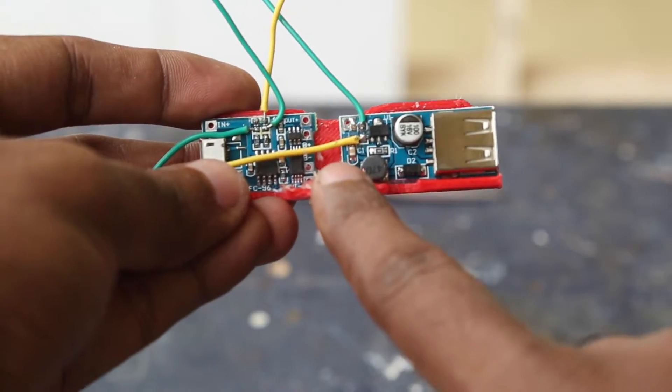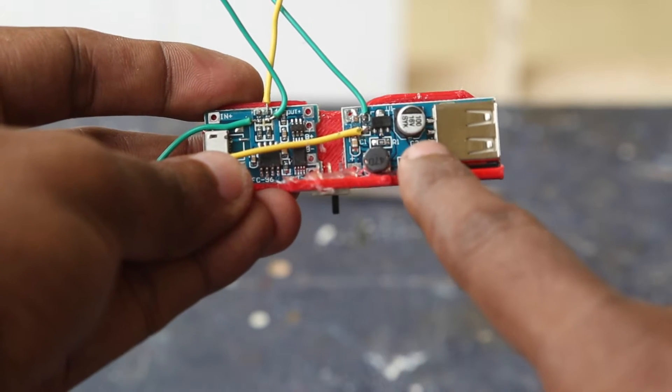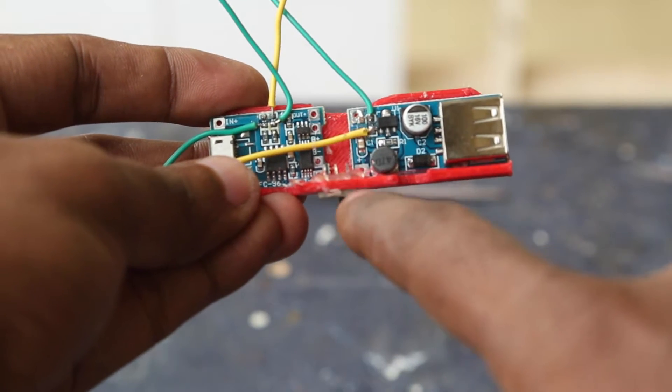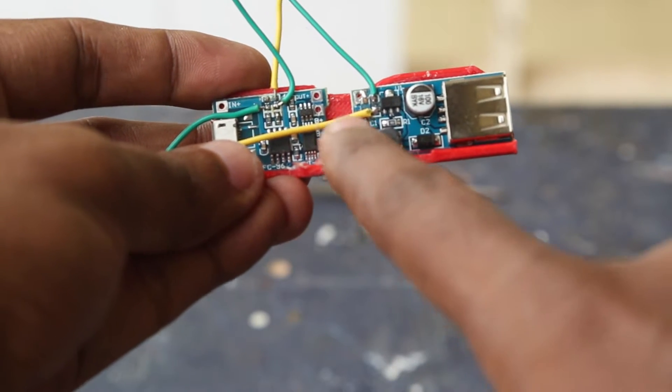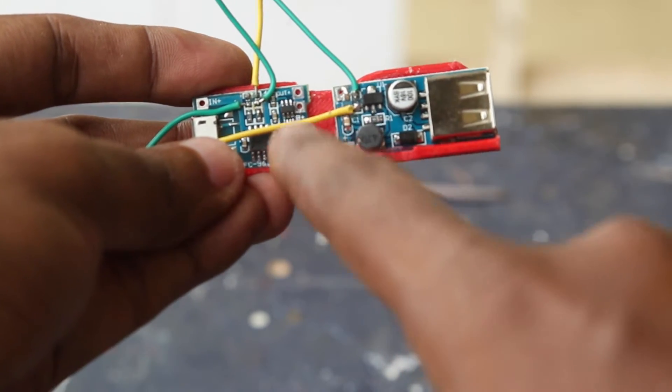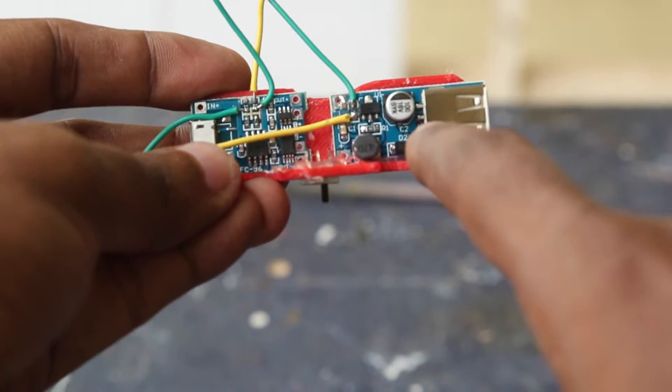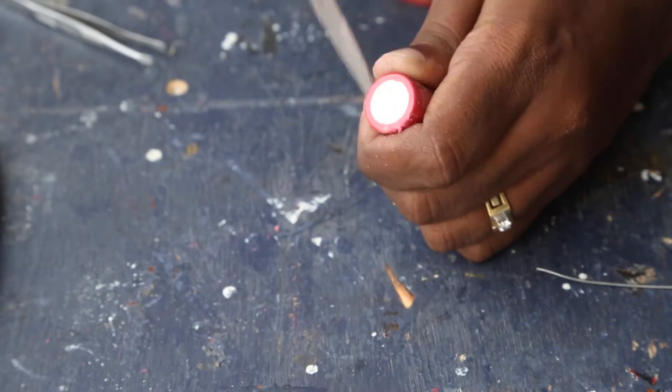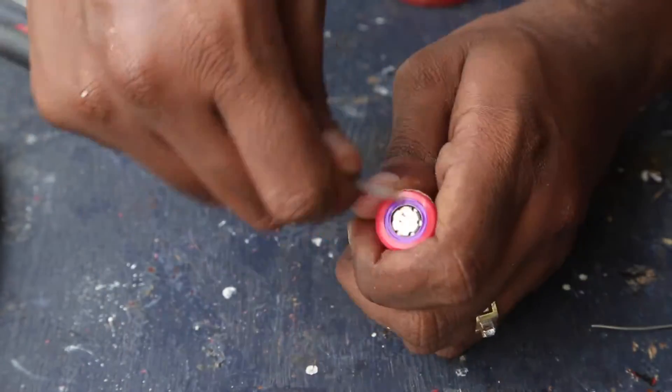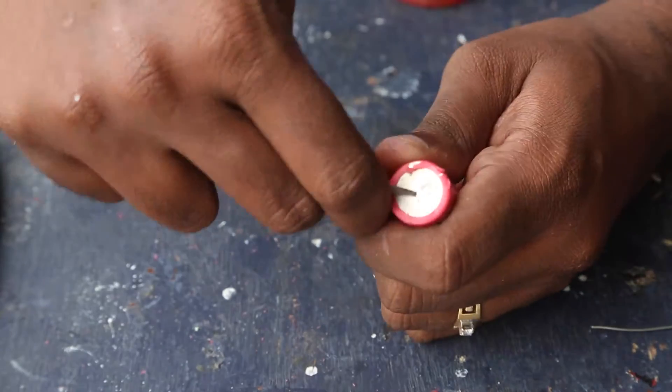Now that the switch is glued on it's time to connect the charging circuit with the boost converter. I'm going to do that through the switch so that when I turn on the switch the power goes from the output terminals of the charging circuit to the boost converter. Using the file I prep the battery surface for soldering. Soldering adheres well to rough surfaces.